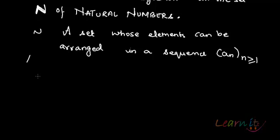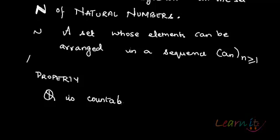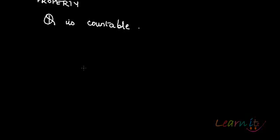One essential property you should know is that the set of rational numbers Q is countable. Q is countable because its elements can be arranged in a sequence a_n where n is a natural number greater than or equal to 1. Those sets are called countable which are almost like a bijection with natural numbers — meaning they have essentially as many elements as N.